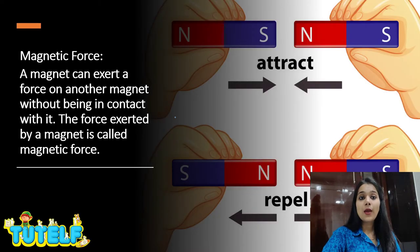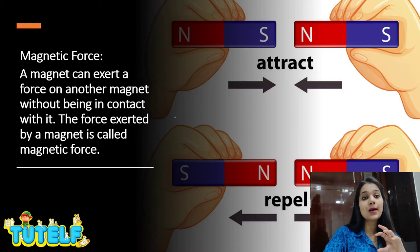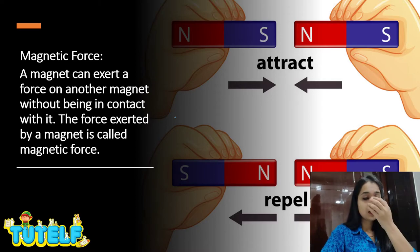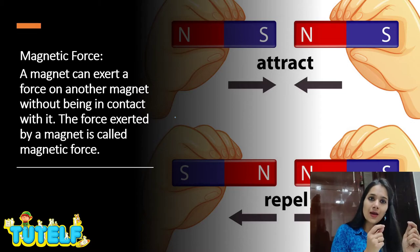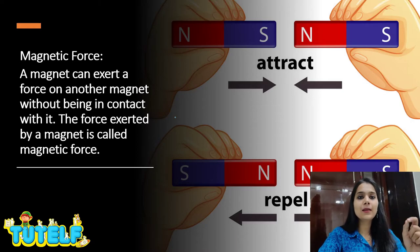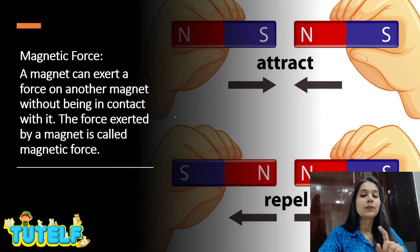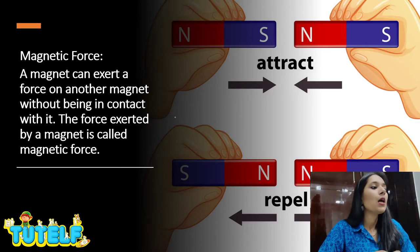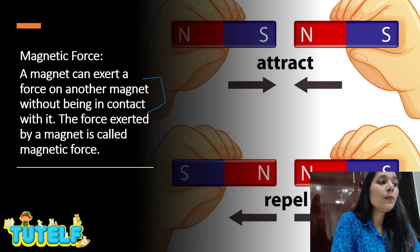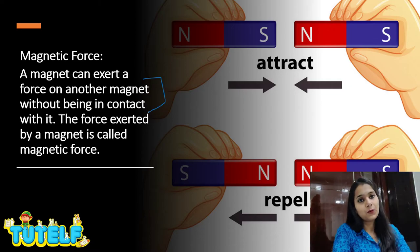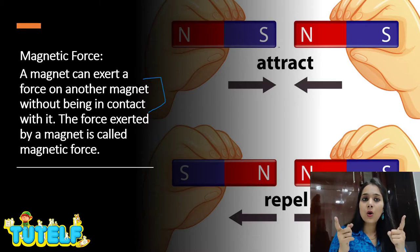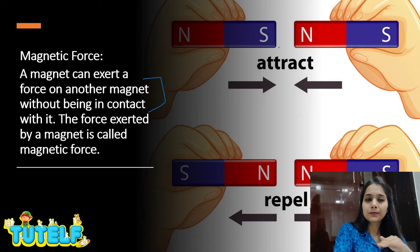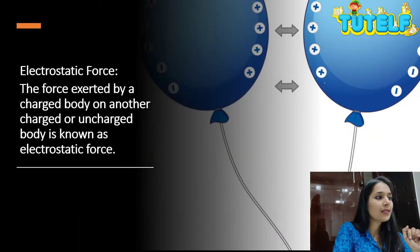Next are the non-contact forces, where you will not be touching the object but still causing an effect. First is magnetic force. Many times we have played with magnets — a magnet and a magnetic substance — and you make the substance pull towards the magnet. You do not necessarily need to touch your magnet to the surface for the magnetic substance to move; just bring it from a distance and the magnetic substance starts to move. The magnetic force is the force which a magnet exerts on another magnet or magnetic substance without being in contact. Like poles repel each other and unlike poles attract each other.